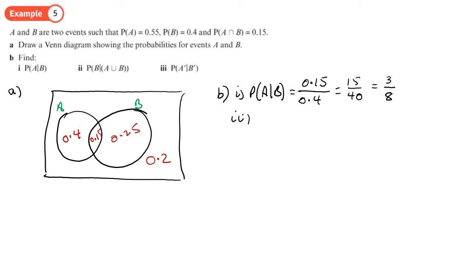And second bit, the probability looks a bit more complicated, of B given that it's A union B. So again, the same principle. What is A union B? Well, A union B is 0.8.